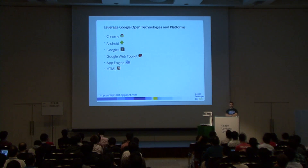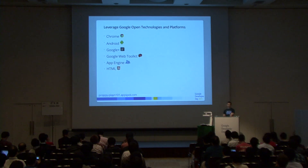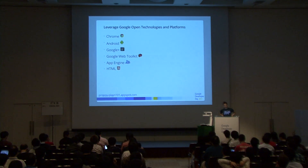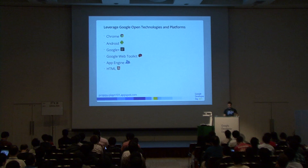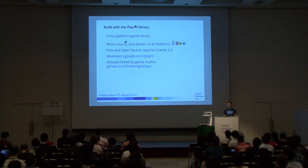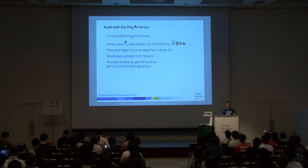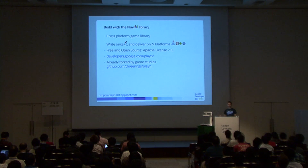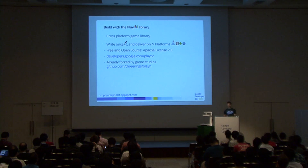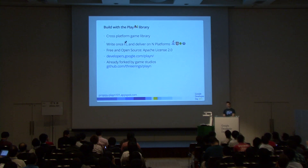It's built using Google Web Toolkit for the Chrome Store version, hosted on App Engine, and makes a lot of use of HTML5. But the missing ingredient is the PlayN library. PlayN is a cross-platform game library — you write your game once in Java and deliver it on multiple platforms: desktop Java for development, HTML5 for web apps, Android, and Flash. It's free and open source under the Apache license.